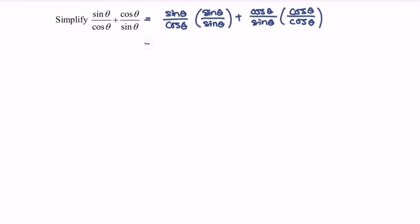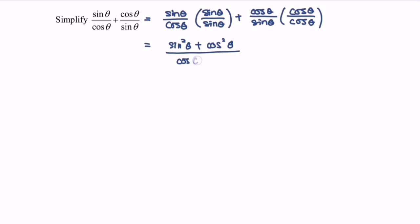Next, we have sin²θ plus cos²θ over cos θ · sin θ.